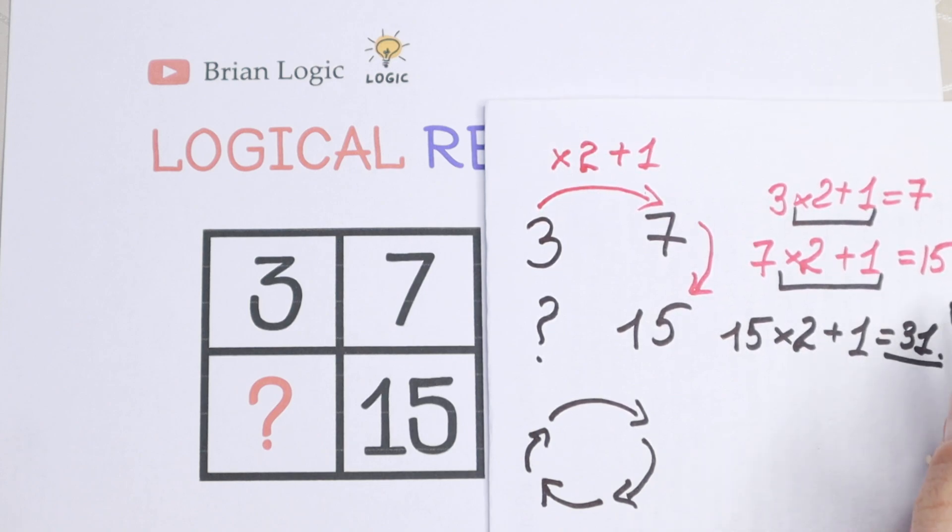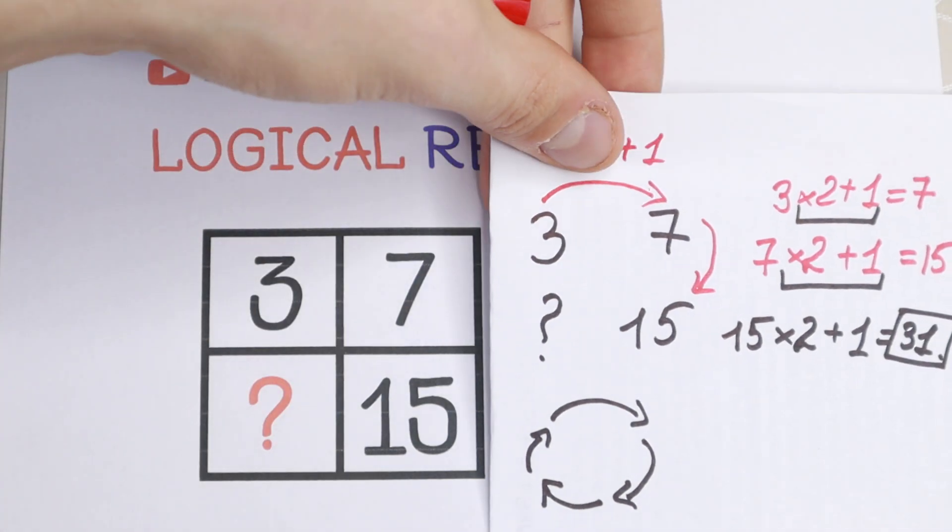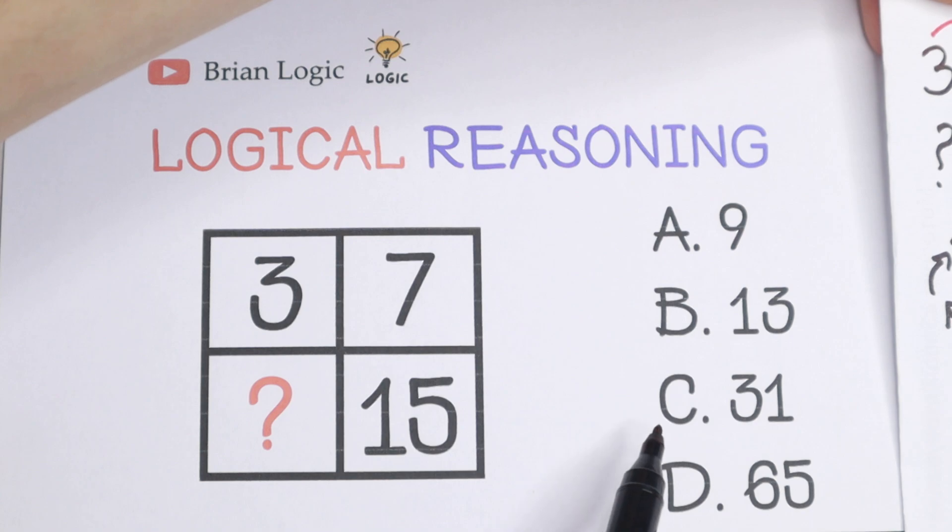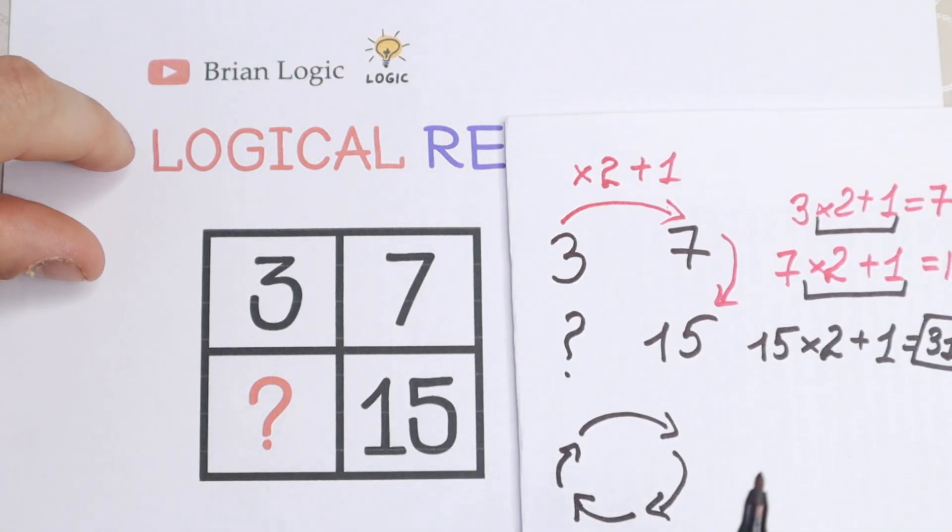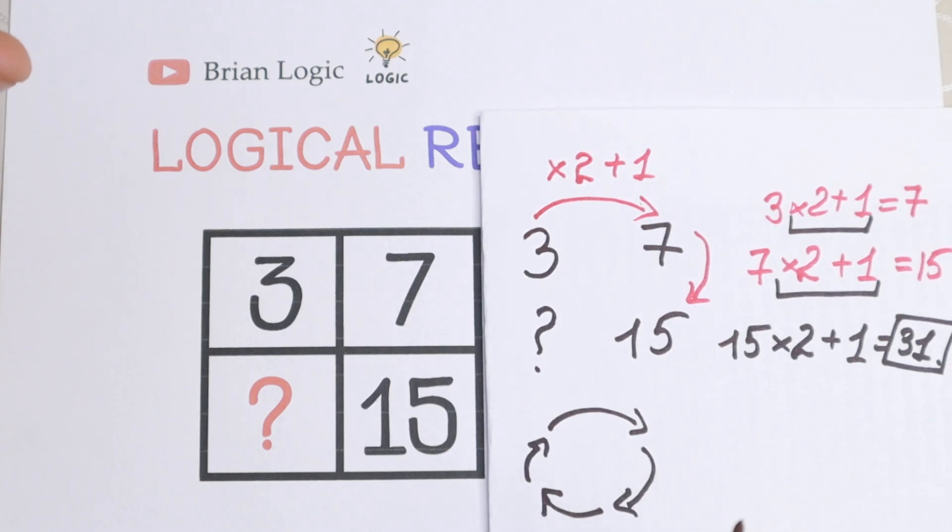So this is my solution. If we are talking about an option, we will have 31. Option C. What do you think about this solution? Maybe you find another pattern about this number. It will be really interesting to read it.